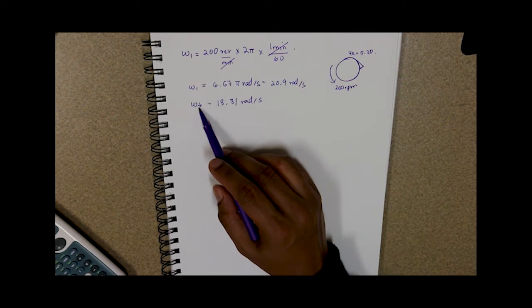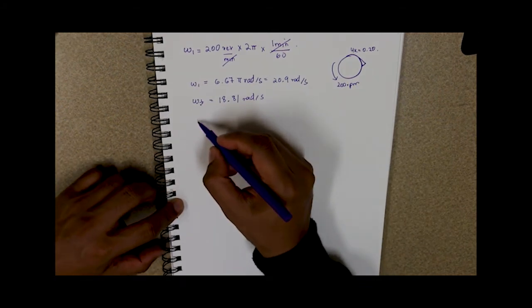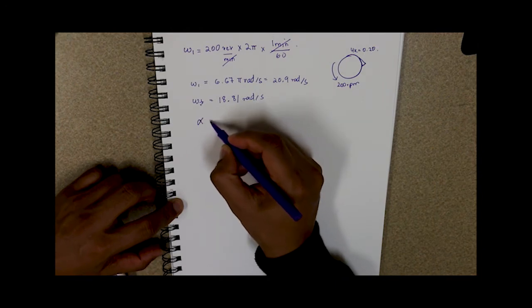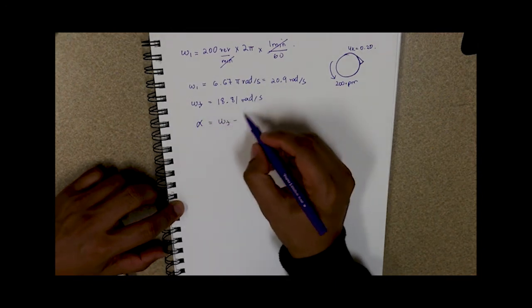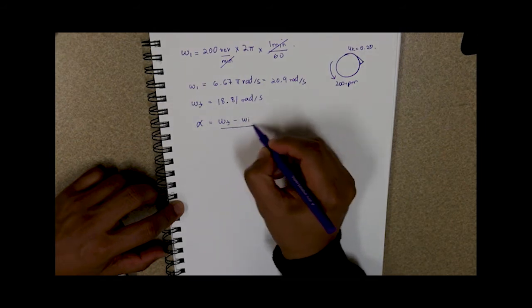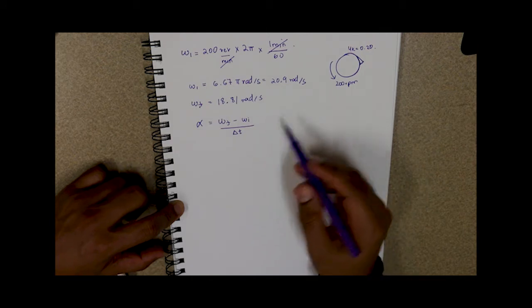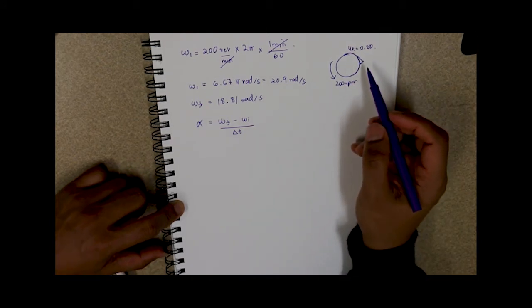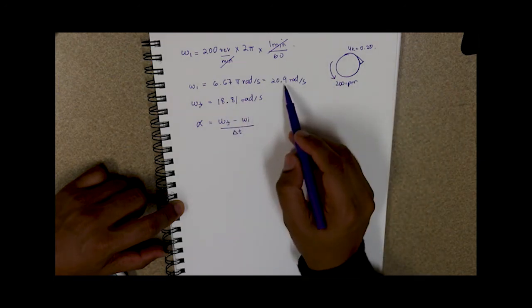So we know our final angular velocity, we know our initial angular velocity. We can find out our angular acceleration denoted by this symbol here. So our final minus our initial all over our time. So it took 10 seconds for the speed to become less by 10 percent. So this is effectively 10 percent less than this.